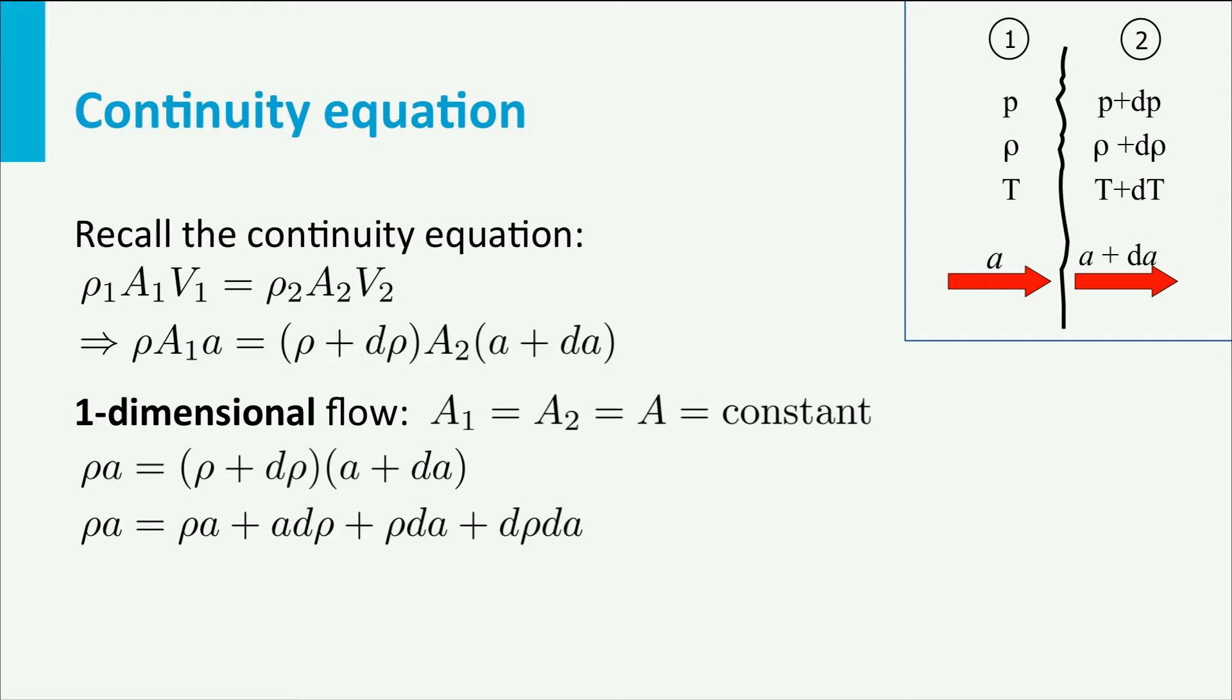Resolving the part between brackets gives us this expression, rho times A is on both sides, so this disappears. Now, differentials are infinitesimally small, so the product of two differentials, such as d rho dA, is so small that it can be neglected. So, the application of the continuity equation gives us the expression A is minus rho dA over d rho.